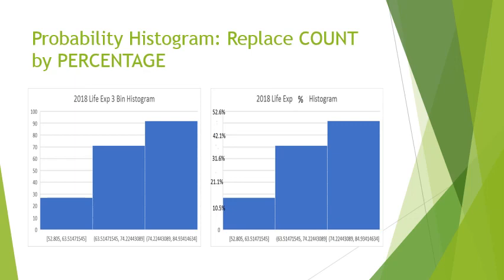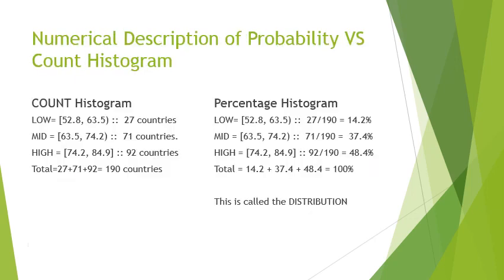The graph is exactly the same, the only difference is that the vertical axis, instead of showing the number of countries, shows the percentage. All numbers must be less than 100 percent because each bin contains only some proportion of the total. This is how the percentage histogram works.